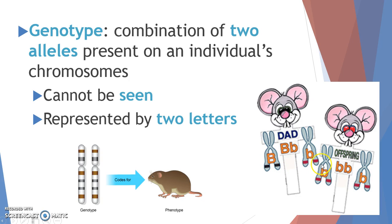Looking at these mice, we examine the dad mouse's homologous chromosomes for one trait and the offspring's homologous chromosomes. The dad's father gave him the allele capital B, and the dad mouse's mother gave him the allele lowercase b. So the combination — big B and little b — is the dad's genotype. The offspring's genotype is two lowercase b's because his father gave him a lowercase b and his mother gave him the other lowercase b, giving the offspring two recessive alleles.